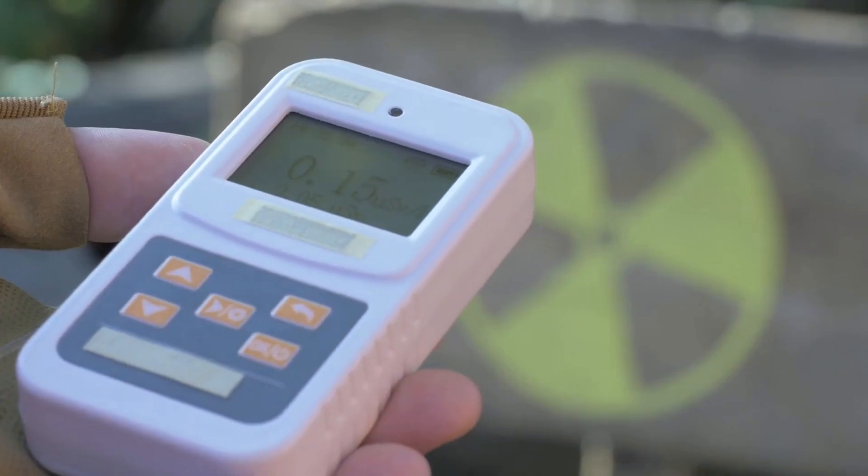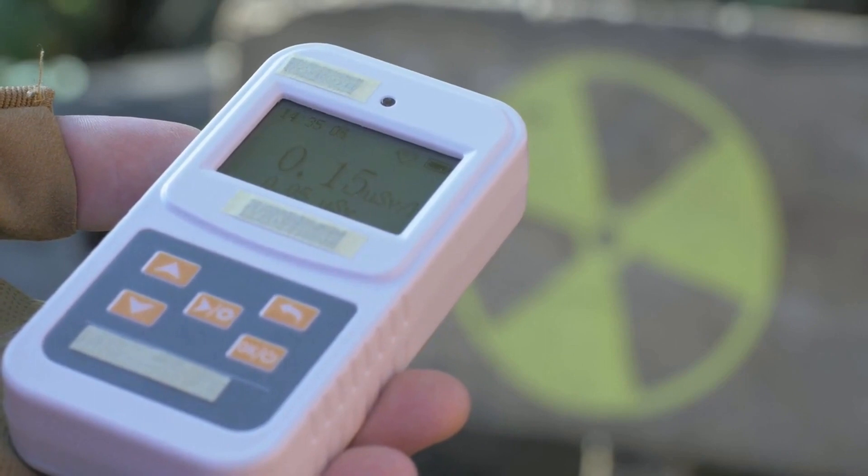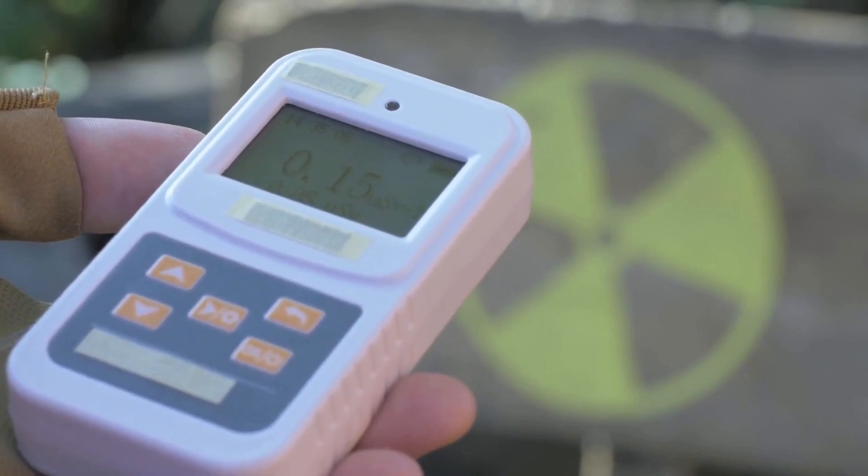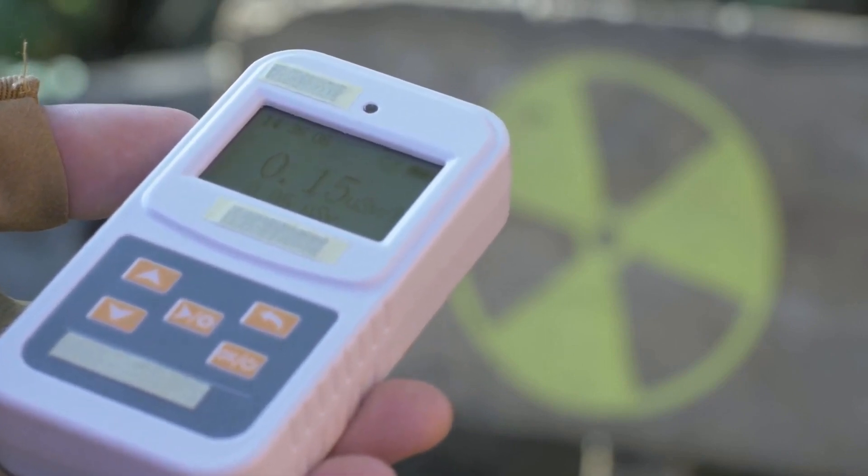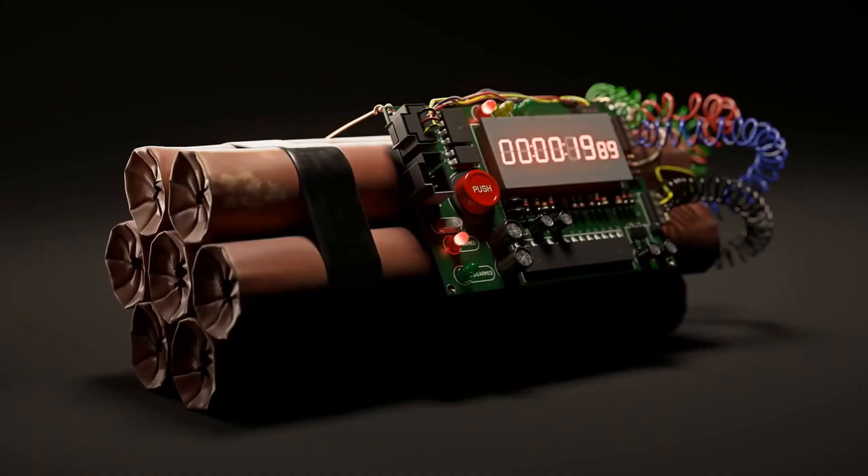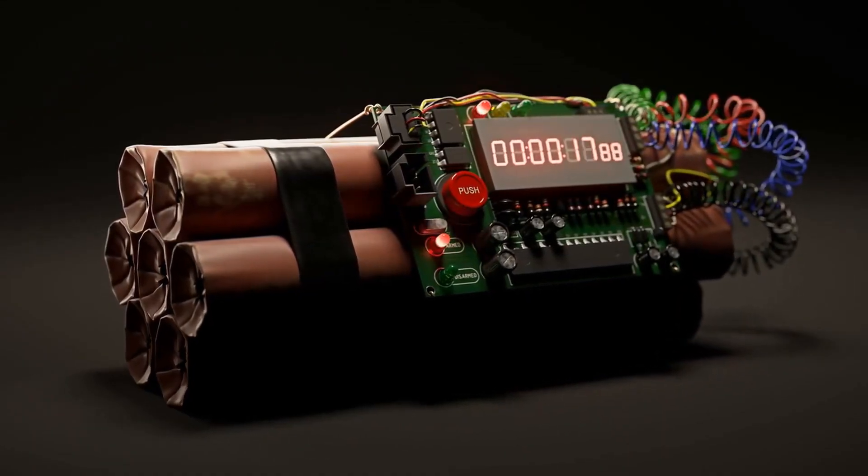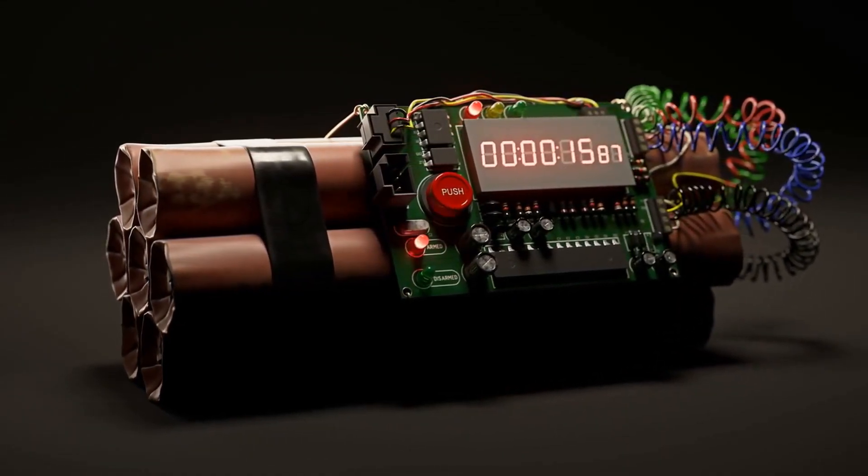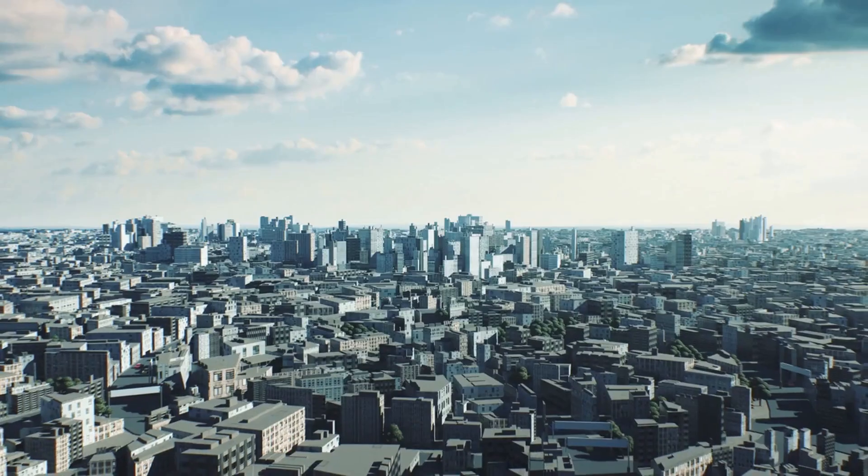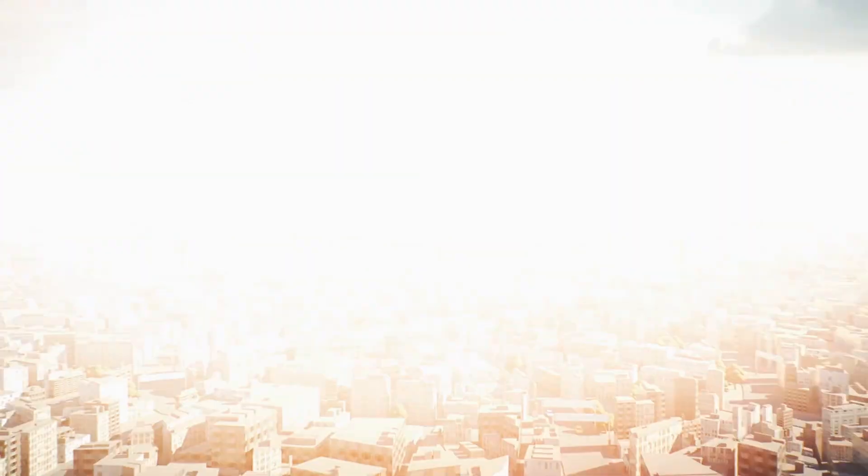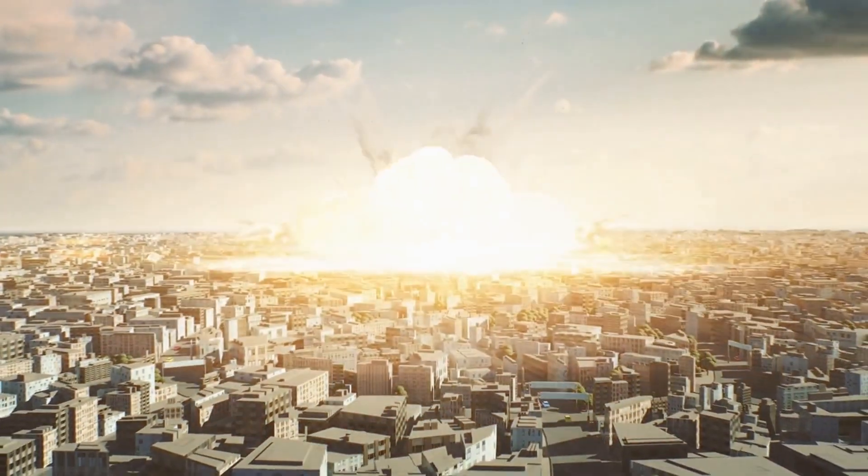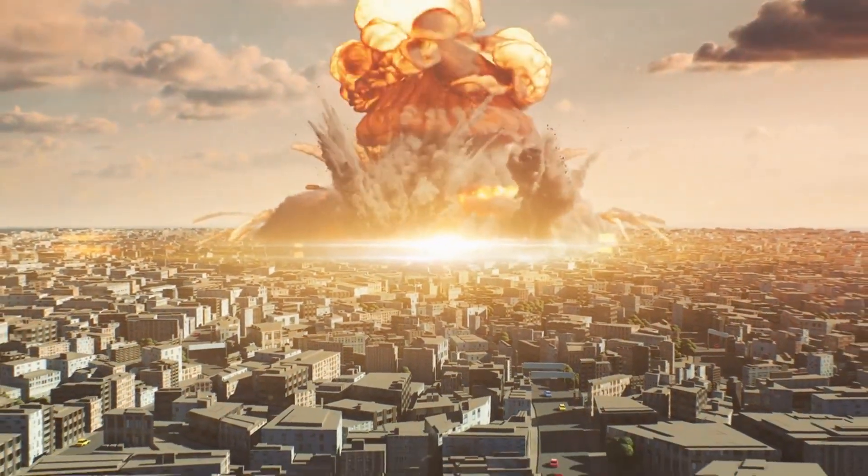The amount of energy released by a nuclear explosion is determined by the size of the bomb, the type of fuel used, and the efficiency of the explosion. The energy is typically measured in terms of the amount of TNT that would be required to release the same amount of energy. For example, a one megaton nuclear bomb would release the same amount of energy as one million tons of TNT.